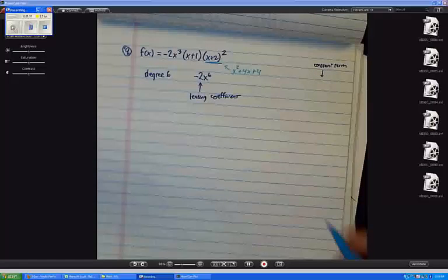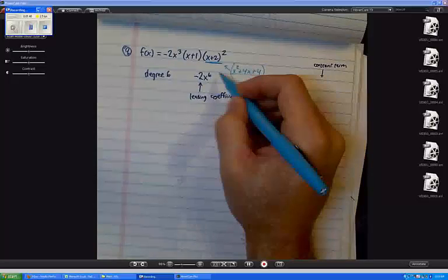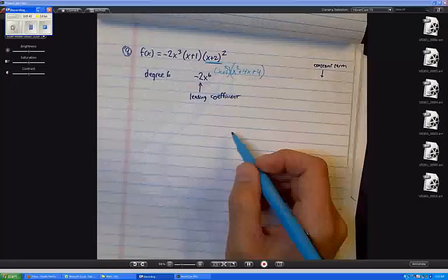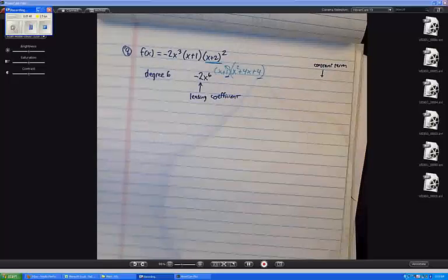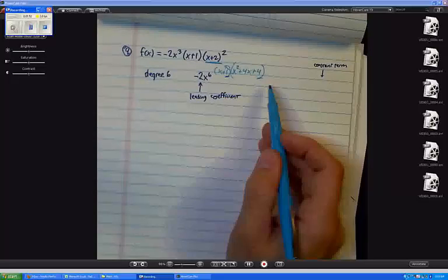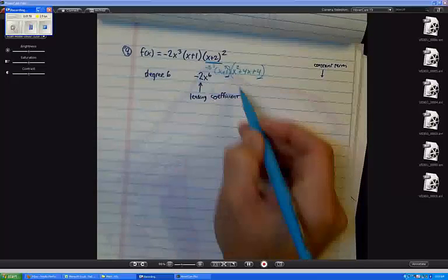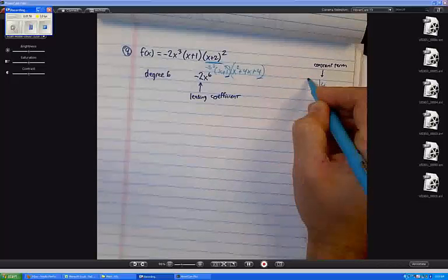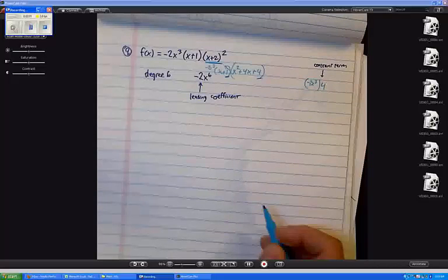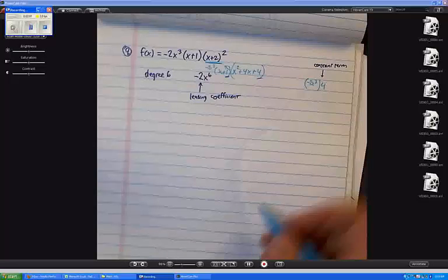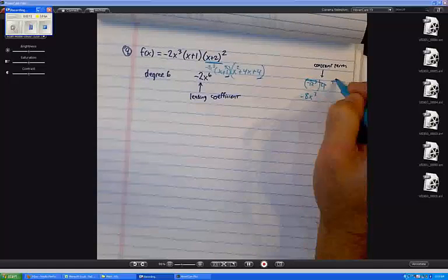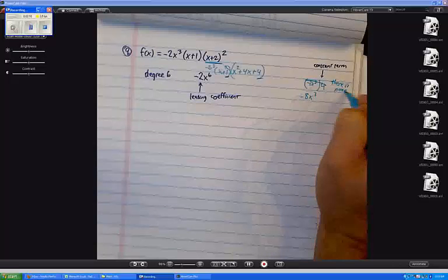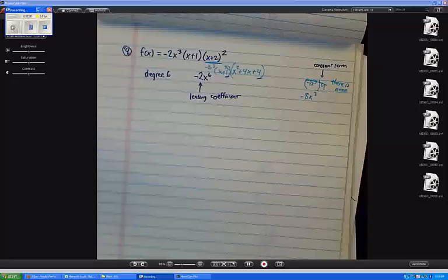I multiply it out. And then, if I were to take that piece and multiply it by the x plus 1, I don't want to do that all. But what's the constant term going to be, the very last piece? Well, it's going to come from 1 times 4, so it's going to be 4. And then, when I multiply that by negative 2x cubed, I'm getting 4 times negative 2x cubed, right? Oh, that's not a constant term. That's negative 8x cubed. I wouldn't call that a constant term. I'd say there is none.